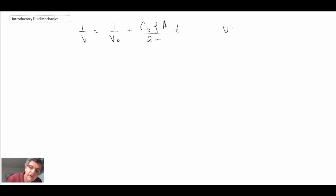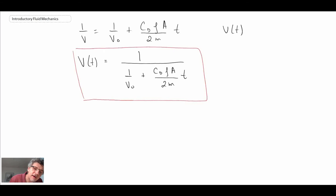So we get this expression here. And remember what we're after is velocity as a function of time. So let's solve for that. And so we get this relationship here. So this is the velocity as a function of time of the bus after the engine fails.